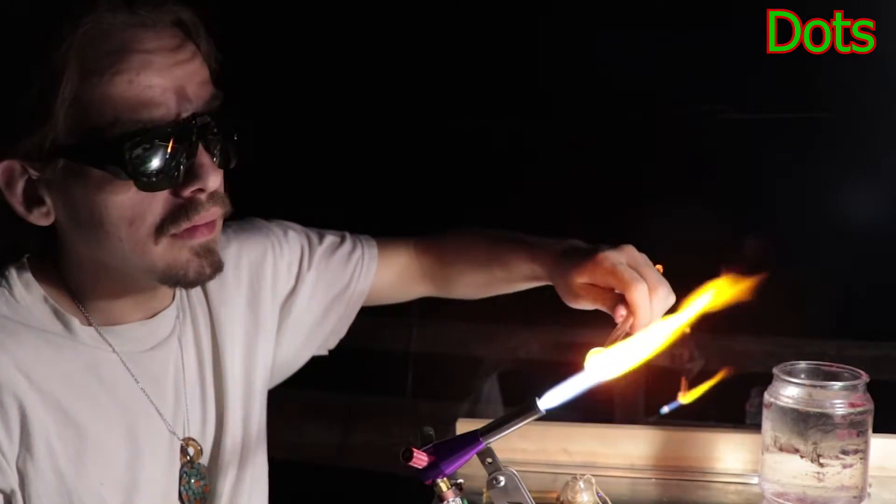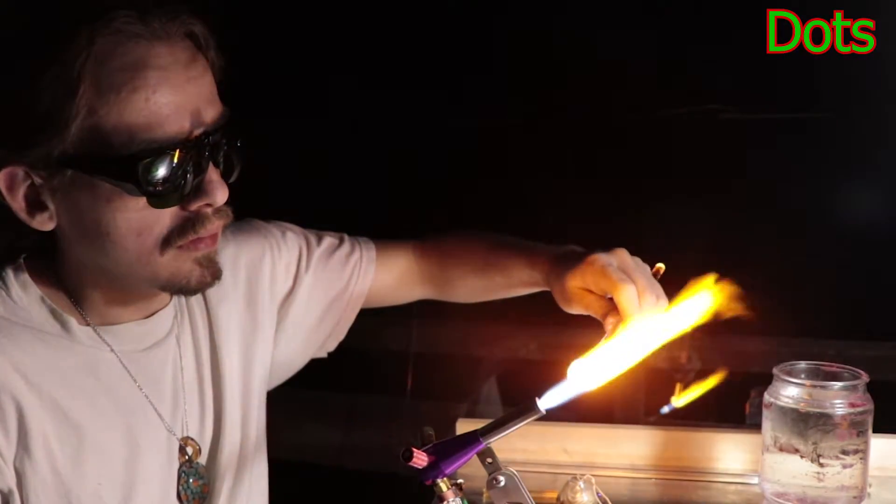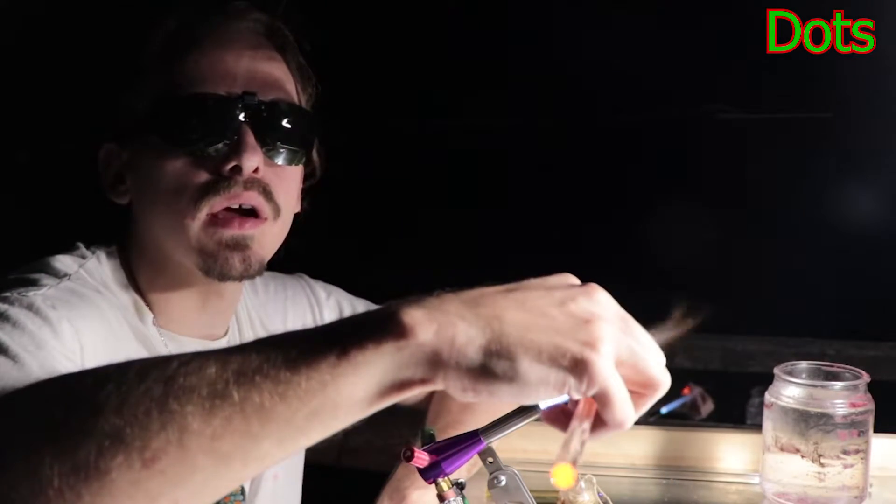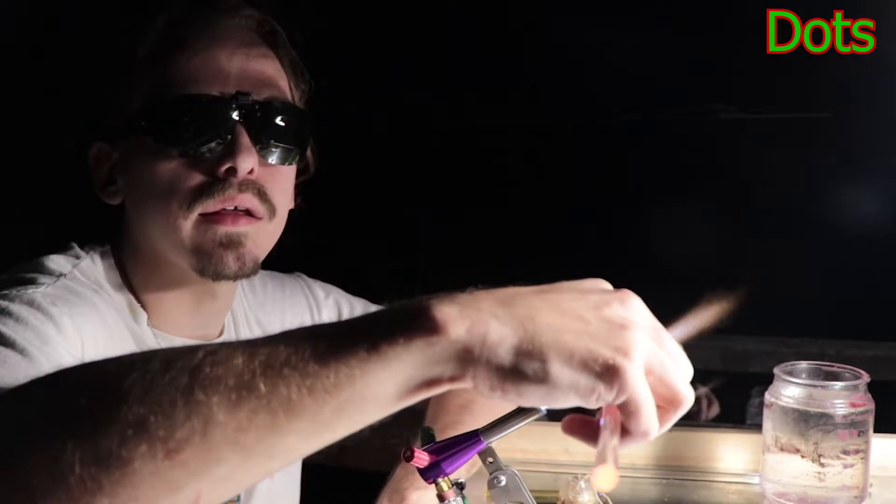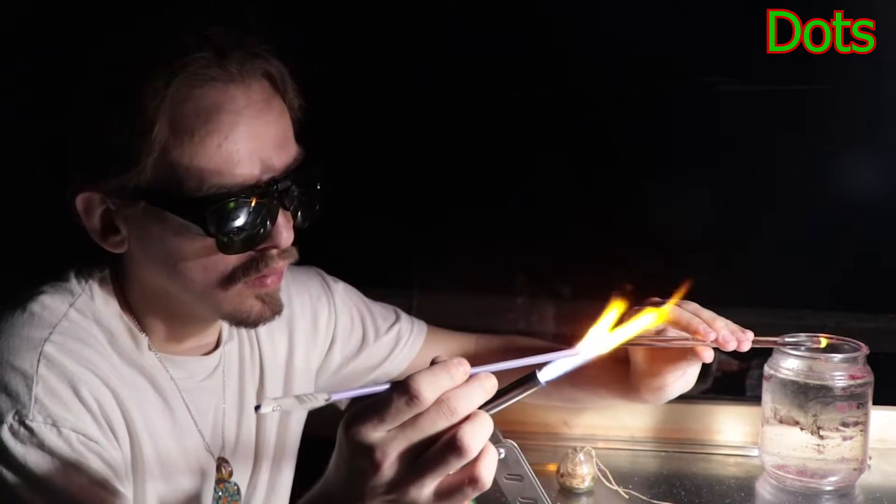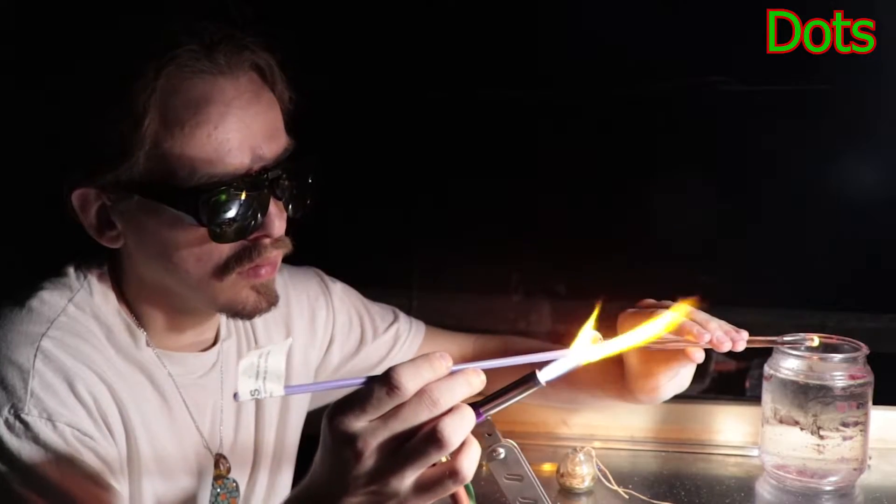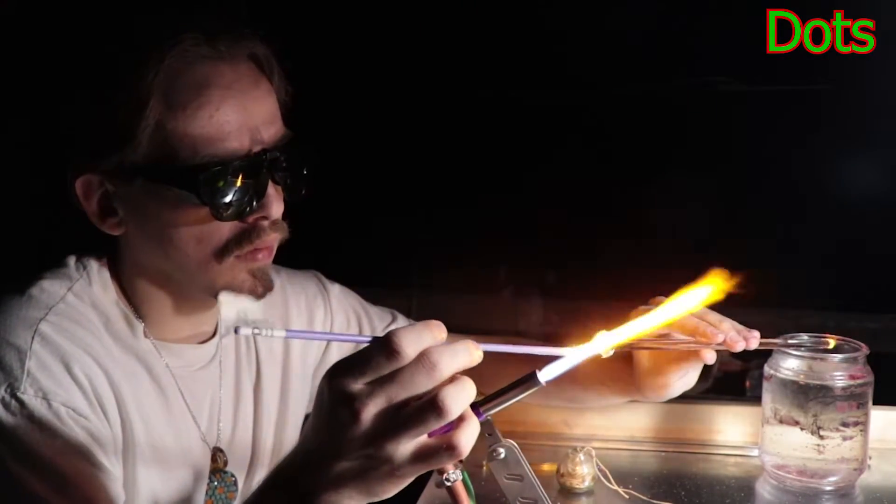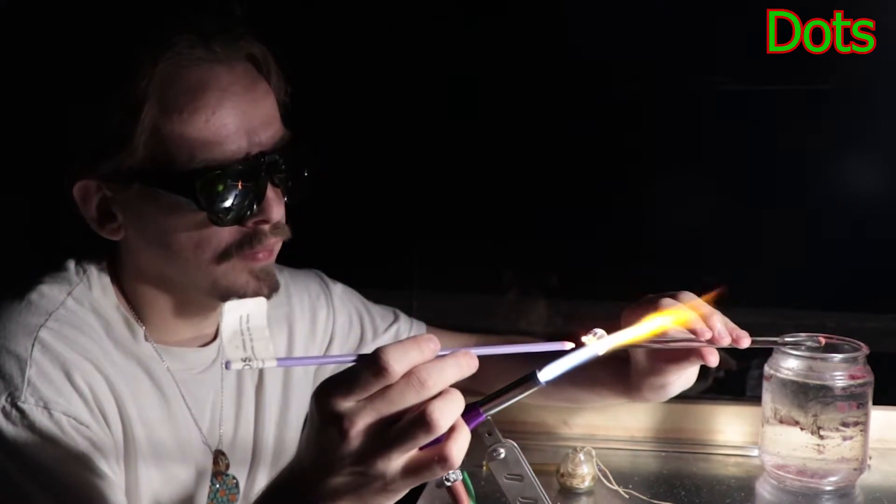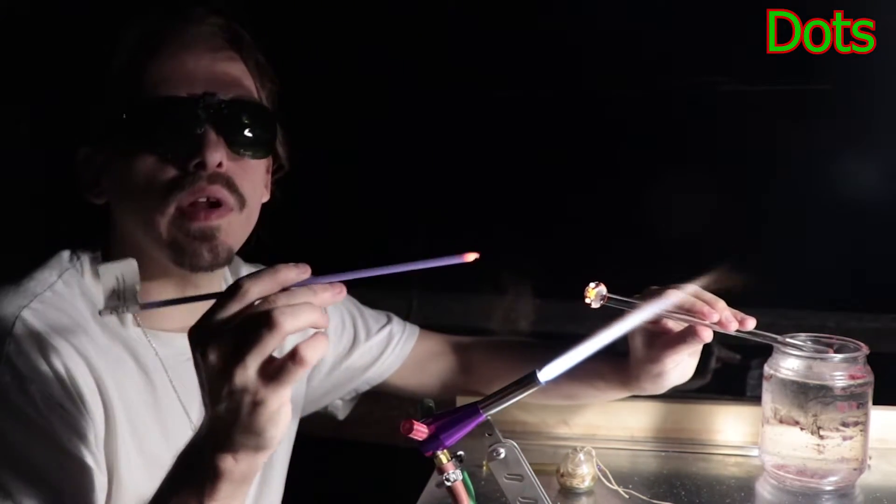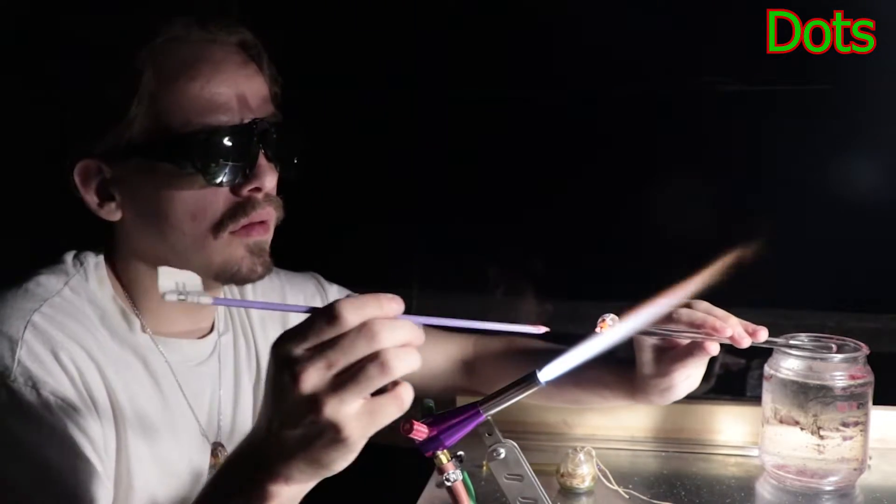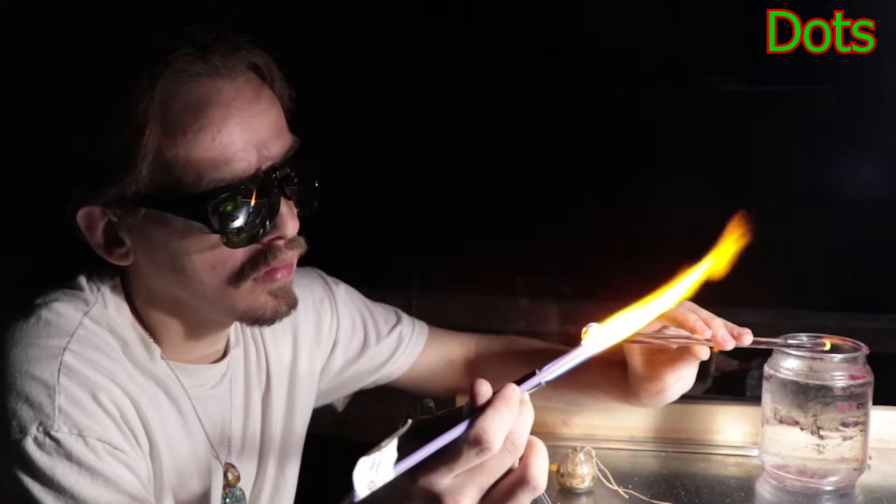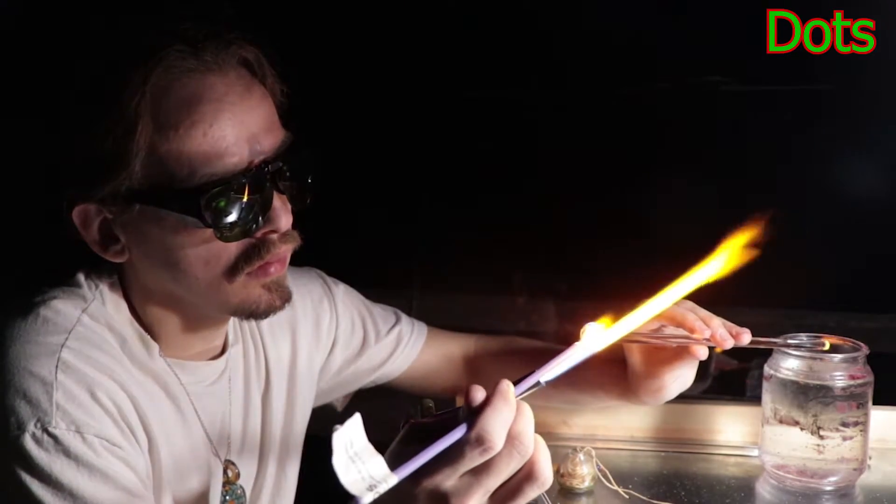Then heat it up again. And then each time I do this it pushes that color deeper into that clear glass. This is a purple color called wisteria from TAG glass. Try to make your dots even in size. And some techniques do require pulling stringers, but it's good to learn how to work off the rod to just save time.